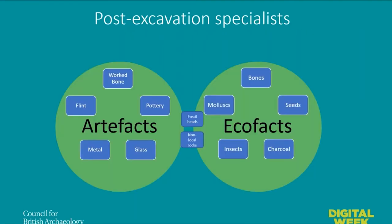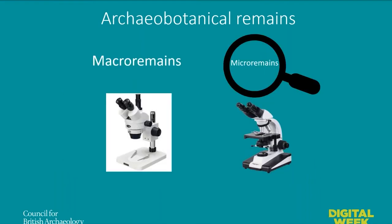There are two types of post-excavation specialists: artifact specialists, who study pottery and flint, and environmental archaeologists, who study environmental remains or ecofacts — bones, seeds, charcoal, insects, molluscs, etc. Going into more detail on archaeobotanical remains — the remains of plants — these can be distinguished between micro-remains, invisible to the naked eye requiring powerful microscopes, and macro-remains, visible with the naked eye but still requiring a low-power microscope for study.